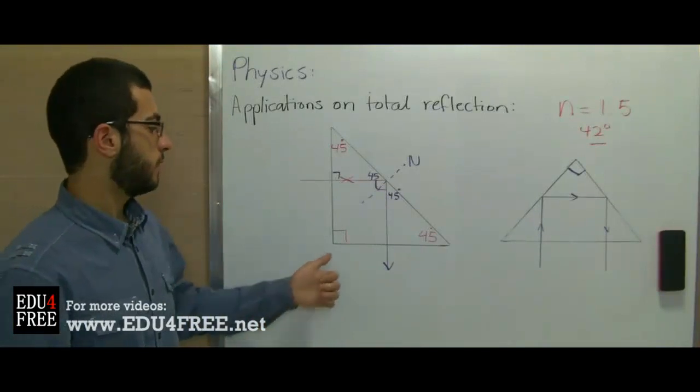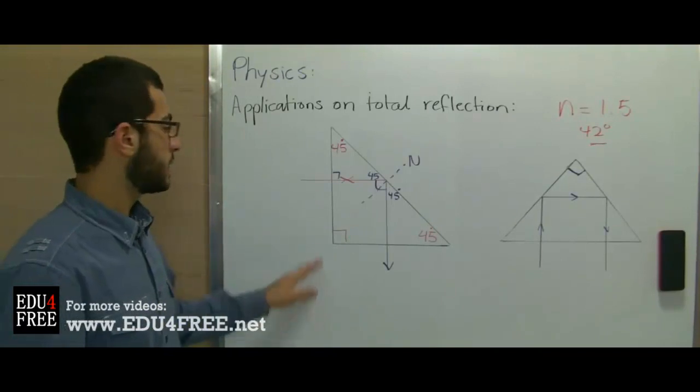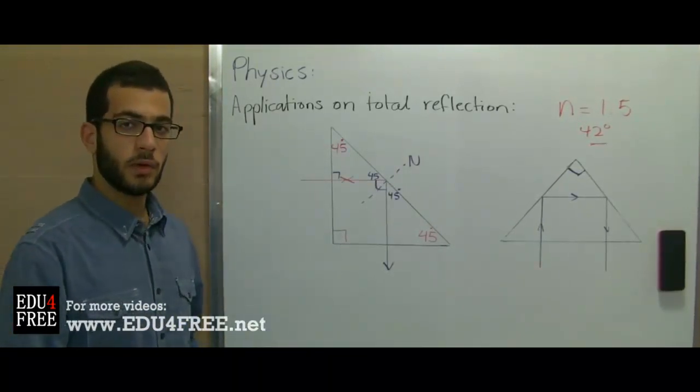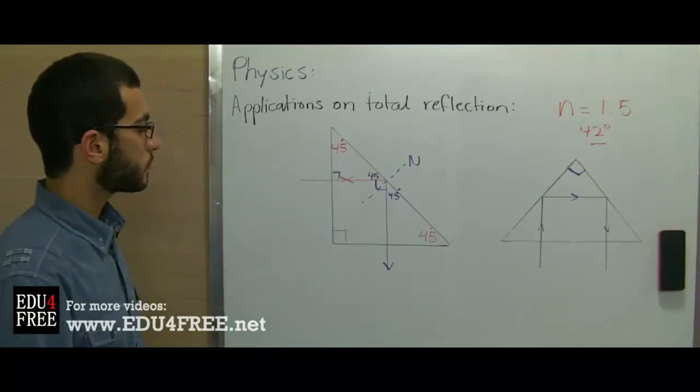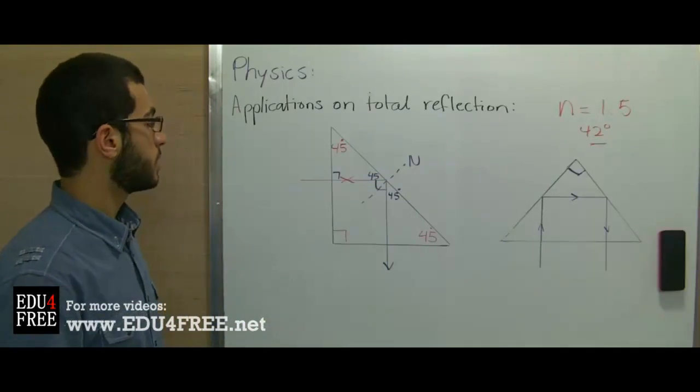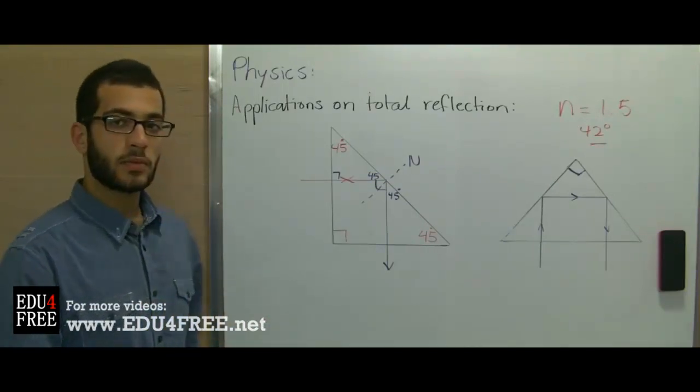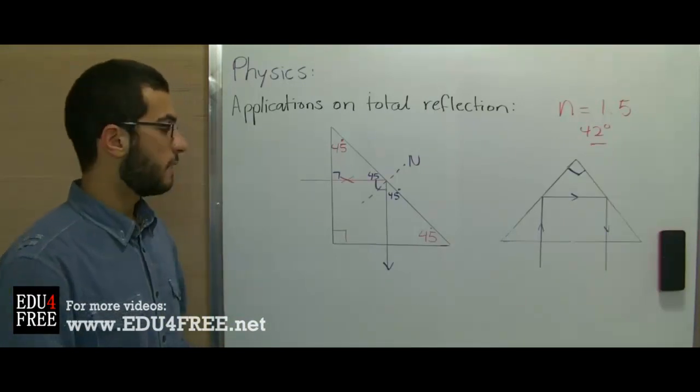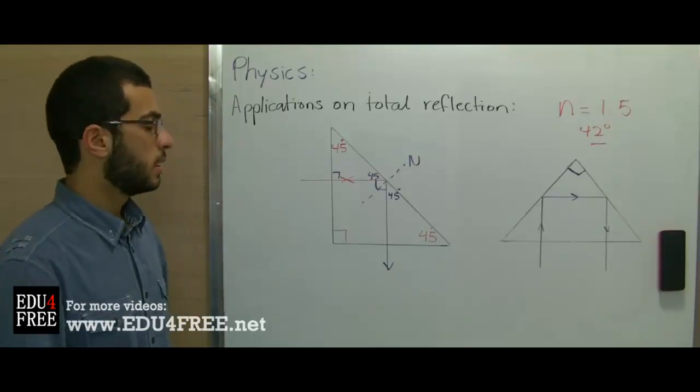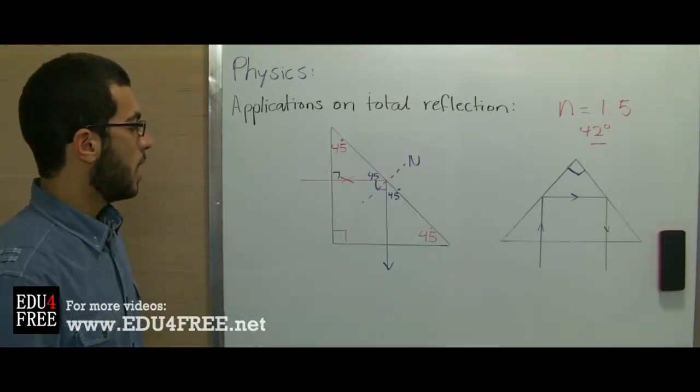These prisms have an advantage over the metallic surfaces that reflect light because the efficiency of these prisms is about 100%. While the metals that reflect the light absorb some amount of light through the process of reflection, so there is a loss of light. Also the metals that reflect light have a metallic luster and so they are subjected to corrosion, and this decreases the capability of these metals to reflect the light.